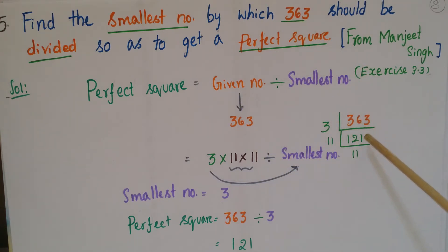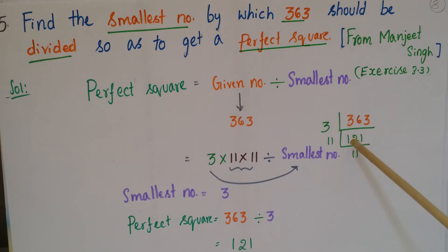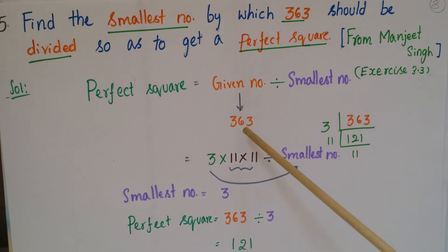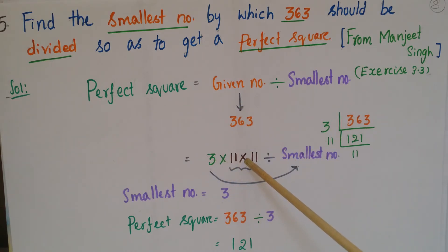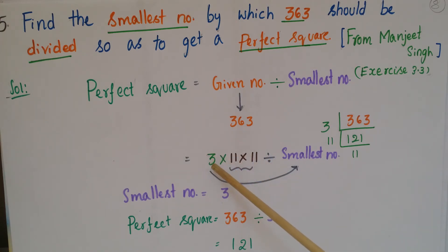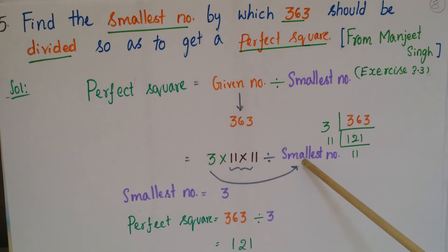We do prime factorization of 363: 3 × 121 = 363, and 11 × 11 = 121. So we can write 363 as 3 × 11 × 11. If you observe here, 11 × 11 is one pair, but for 3 there is no pair.